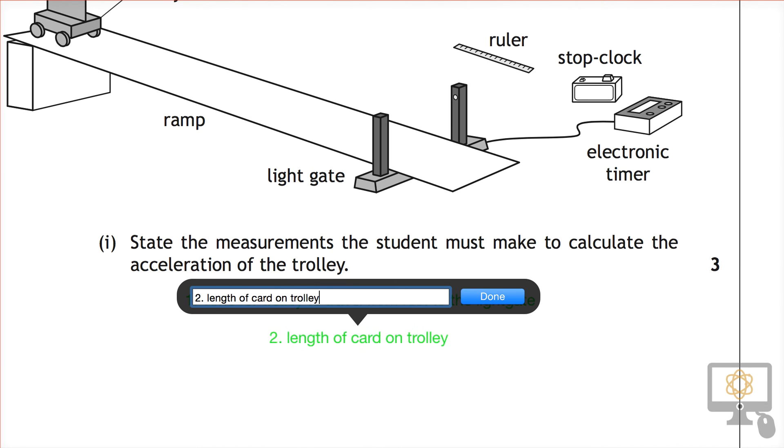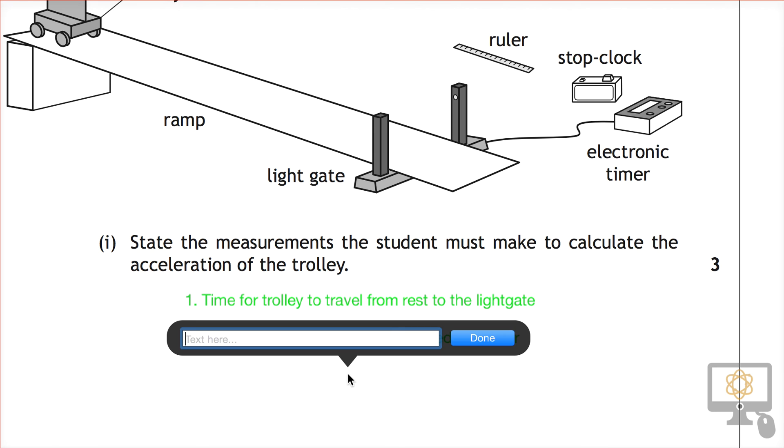And then we say measured with ruler. And three is the time for the card to travel through the light gate.